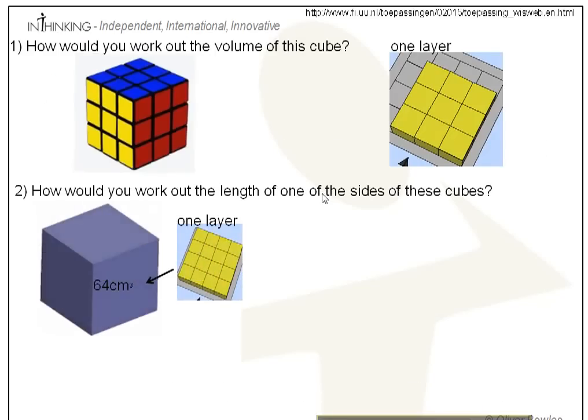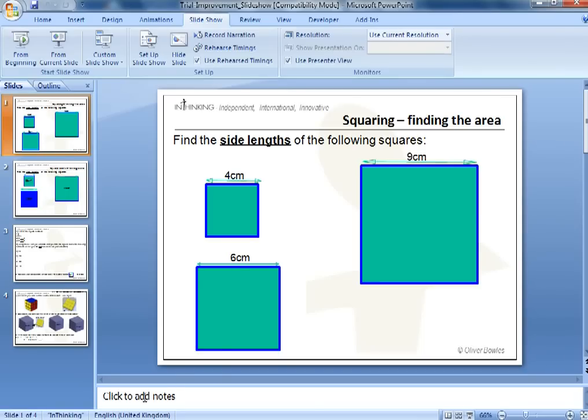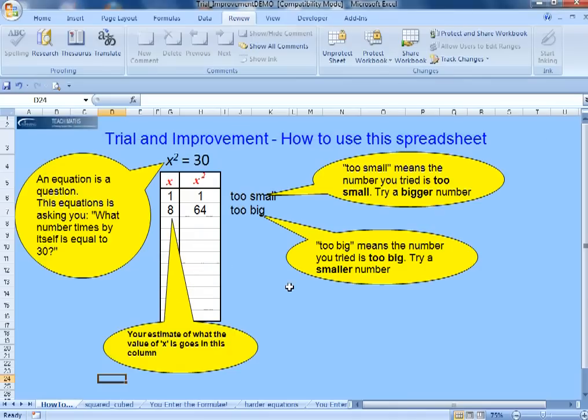Once you think that you're quite good at estimating what the square, cubed, cube root and square root of different numbers are, we're ready to have a go at actually trying to get more precise.